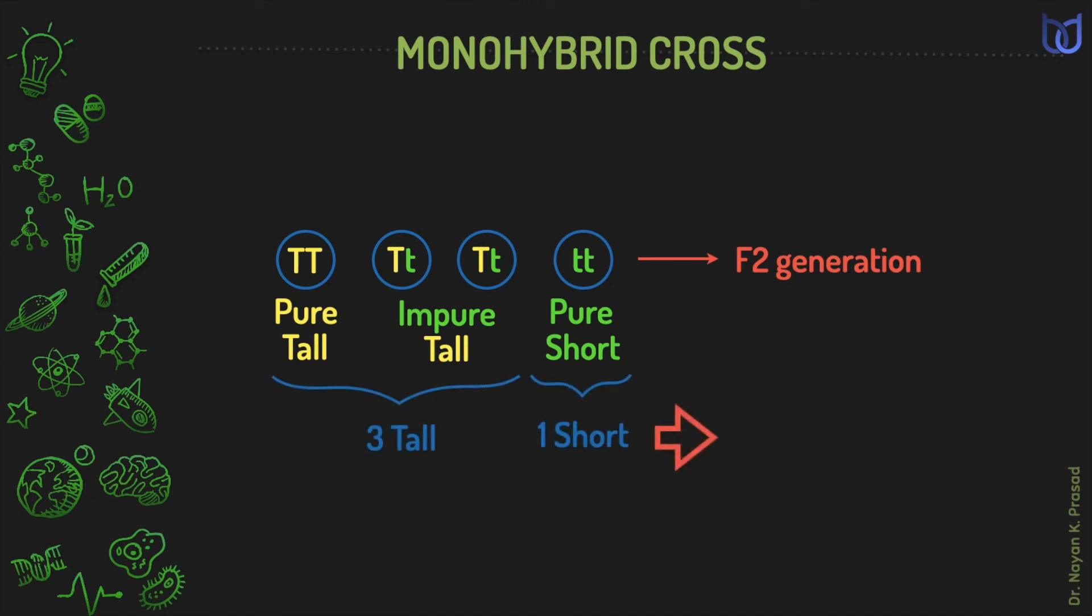This physical appearance of the plants is called phenotype and the ratio of phenotype numbers 3 to 1. But when we see their purity and impurity, then this is called genotype. And according to genotype condition, we find one pure tall, two impure tall, and one pure short. So, the ratio becomes here 1 is to 2 is to 1.